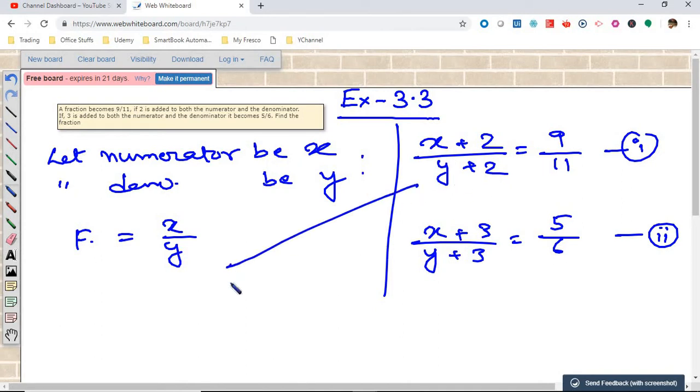Solve these two equations. Let x plus 2 by y plus 2 equals 9 by 11. This will be a simple cross multiplication, which means 11 times x plus 2 equals 9 times y plus 2.